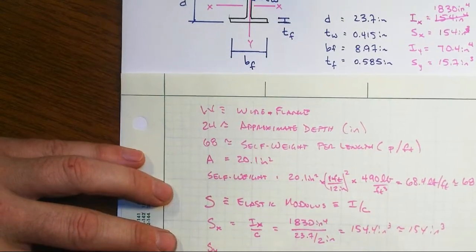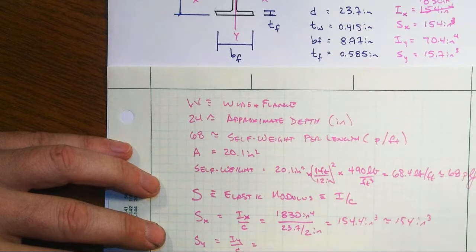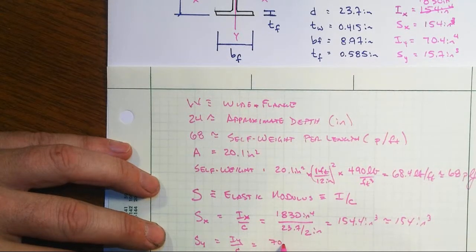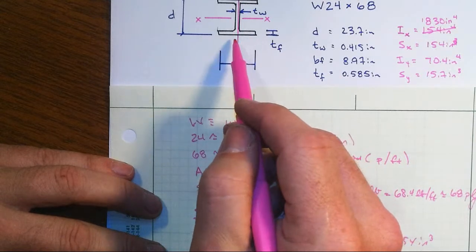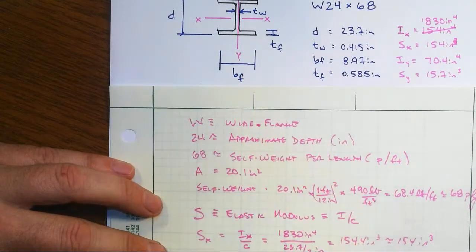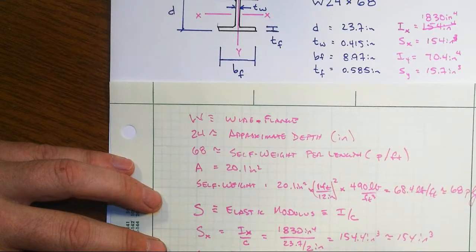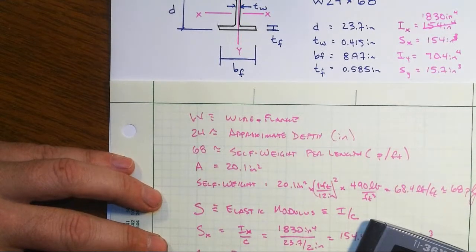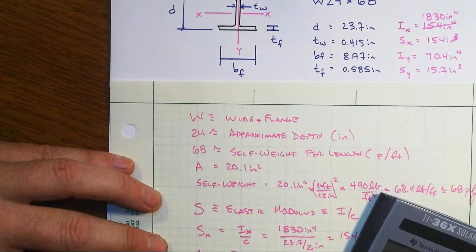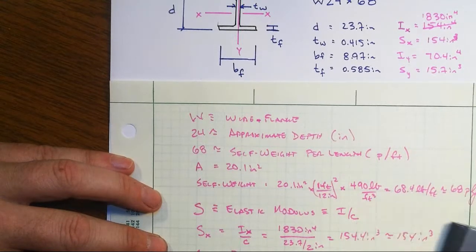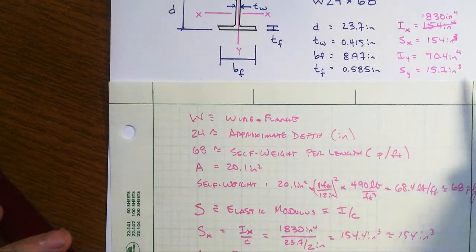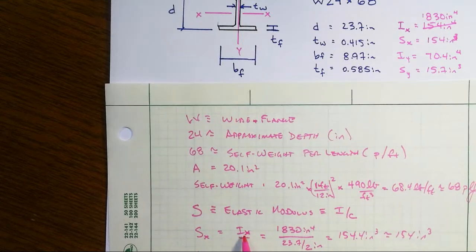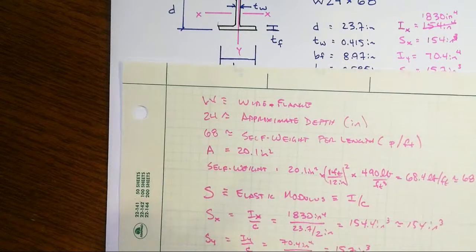So the Sy value would be corresponding to that. That'd be the Iy divided by a C value, not the same one. That would be 70.4 inches to the fourth divided by, and now to go to the outermost extent piece away from the y axis, the measurement perpendicular would be half of the flange width so that would be 8.97 inches divided by 2. And so 70.4 times 2 divided by 8.97 is 15.7 cubic inches and that's where those properties are. So that's just a convenient way to tabulate that thing because we'll be using that ratio all the time in design.